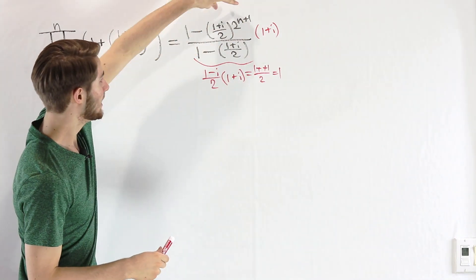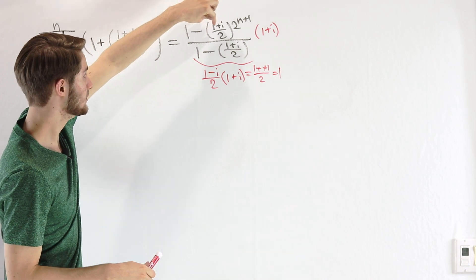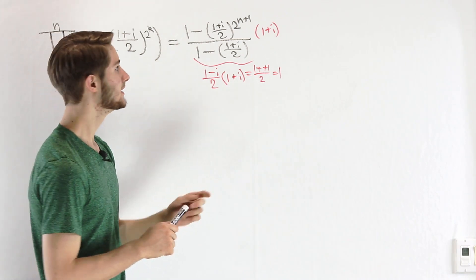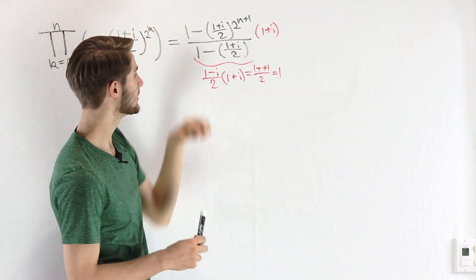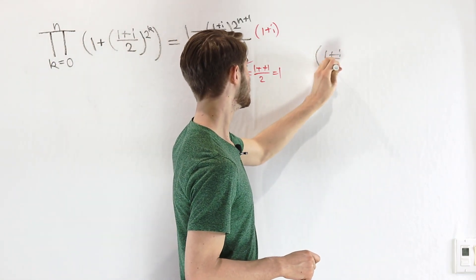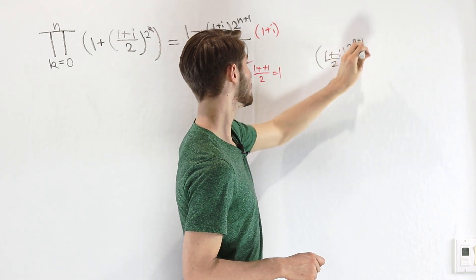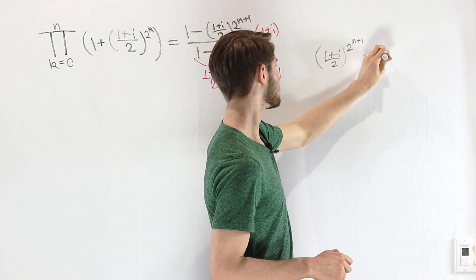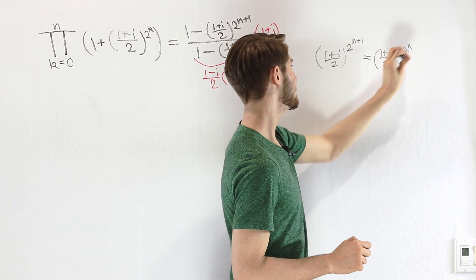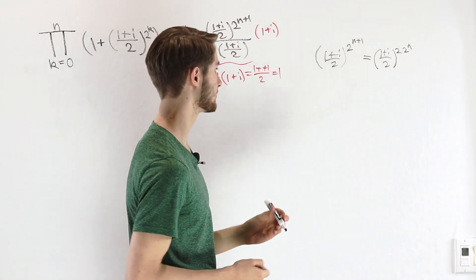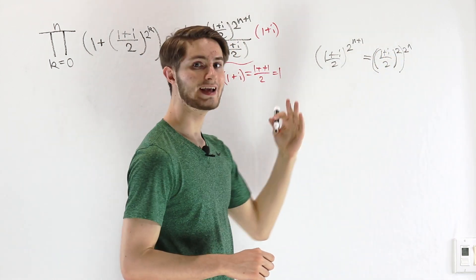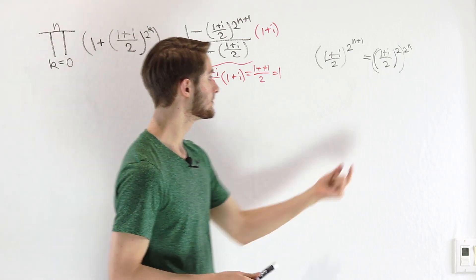Now let's take a look at this term: ((1 + i)/2)^(2^(n+1)). We can actually simplify this by taking a few factors out. We know this equals ((1 + i)/2)^(2 × 2^n). We can also write this as (((1 + i)/2)^2)^(2^n). When we look at this inside, ((1 + i)/2)^2 is (1 + i)(1 + i) on top, divided by 4.